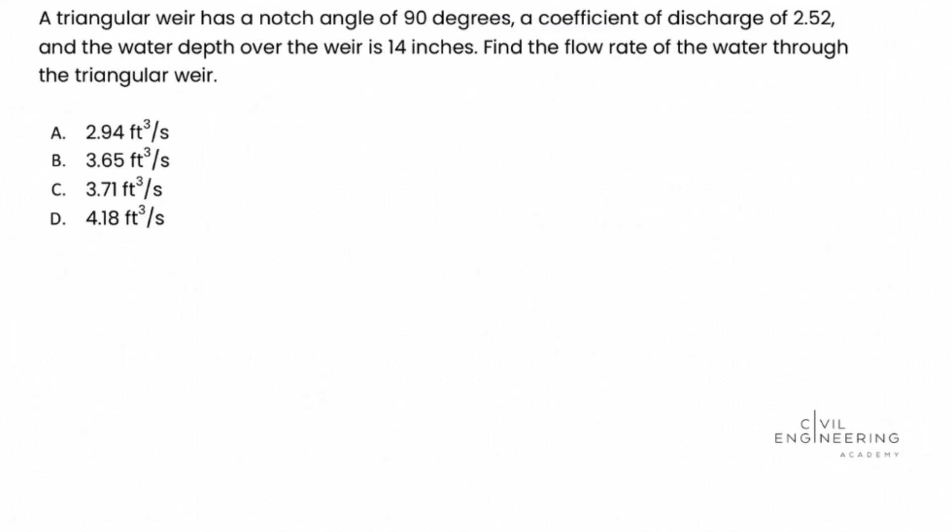So let's dive in. A triangular weir has a notch angle of 90 degrees, a coefficient of discharge of 2.52, and the water depth over the weir is 14 inches.